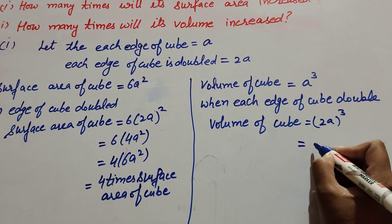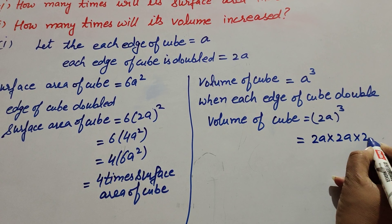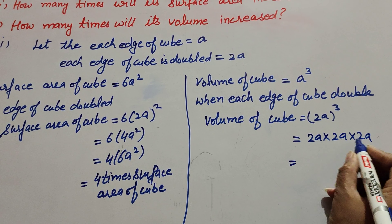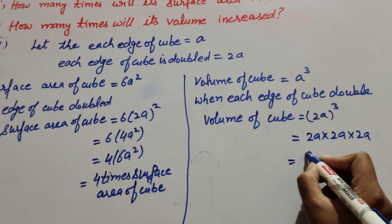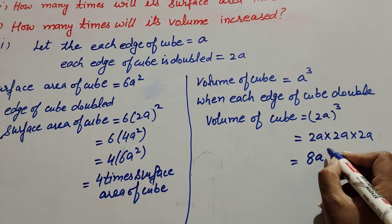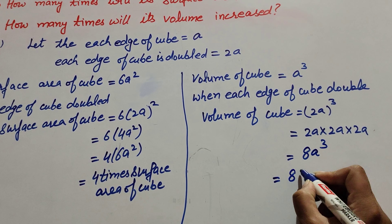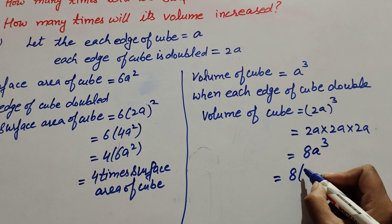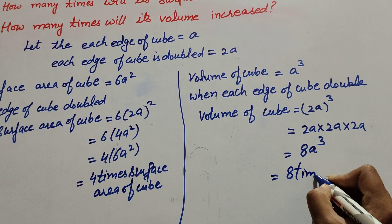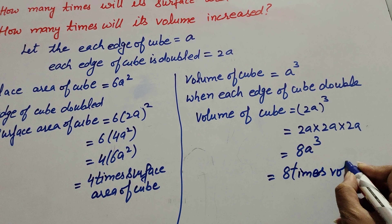2a cubed means 2 multiplied by 2 multiplied by 2, times a multiplied by a multiplied by a, which equals 8 times a³. So the volume of the cube increases 8 times when each edge of the cube is doubled.